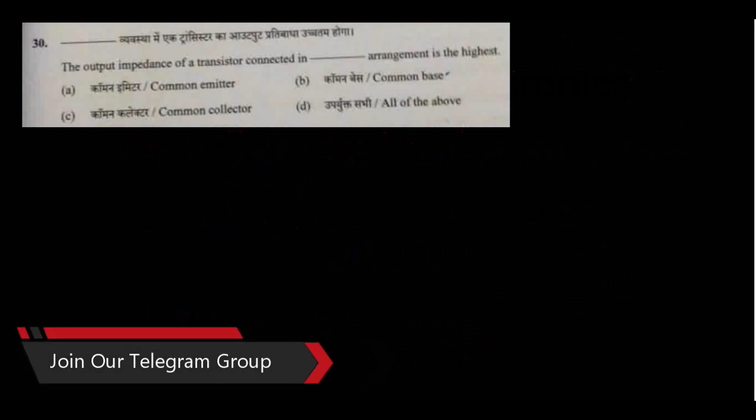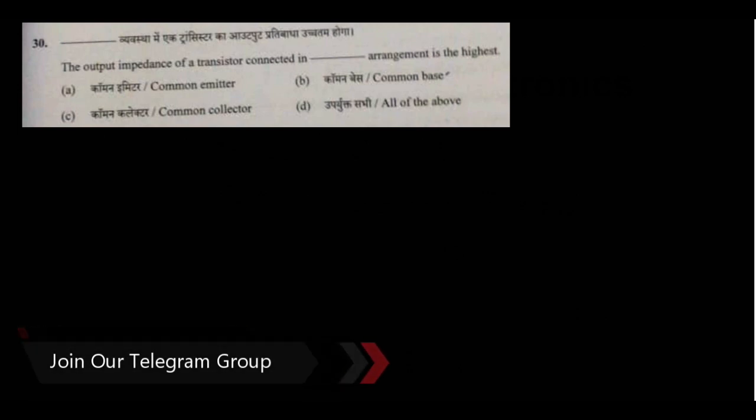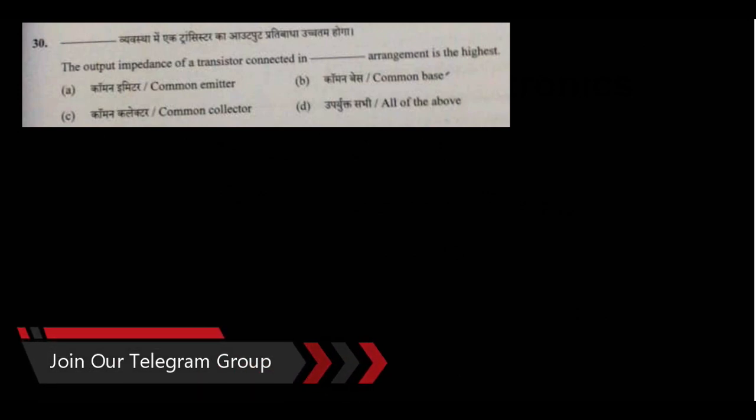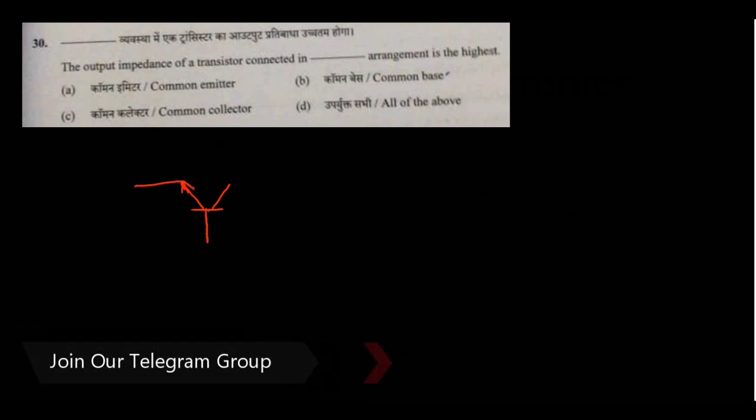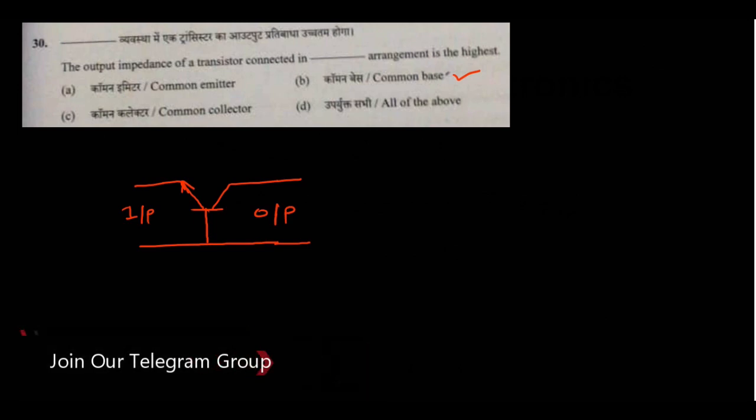Question number 30. The output impedance of a transistor connected in dash arrangement is the highest. So what configuration of a transistor gives highest output impedance? We need highest output impedance, which is this circuit? It is common base. Here we will give the input. Here we will take the output. So the output impedance of a transistor connected in common base arrangement is the highest.